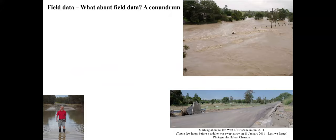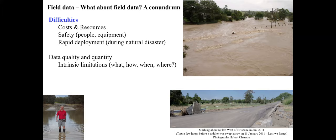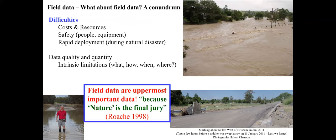Of course, there is a fourth approach: field data. And there is a conundrum. Field data are very expensive, sometimes unsafe, and in situations like a tornado disaster, nearly impossible to deploy. There are also questions about data quality and quantity. But we must remember that field data are of utmost importance, because nature is the final judge.